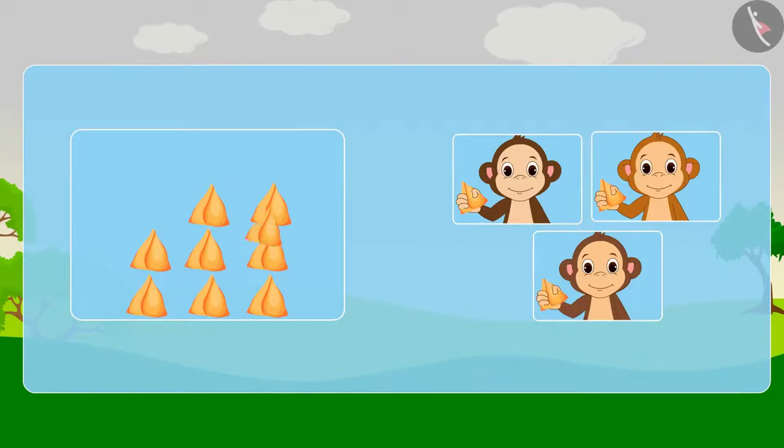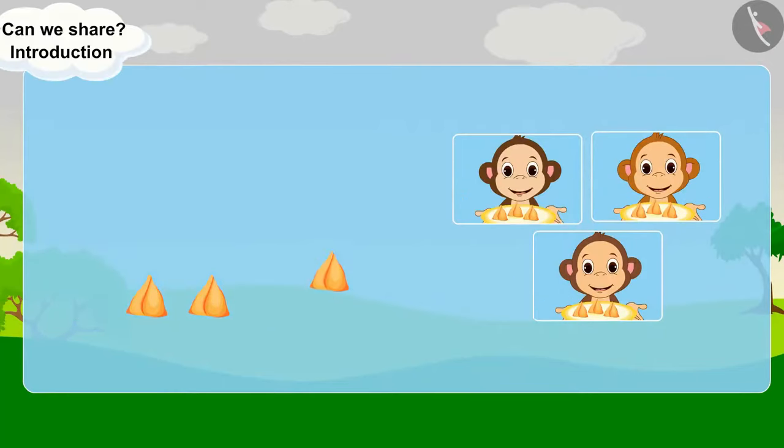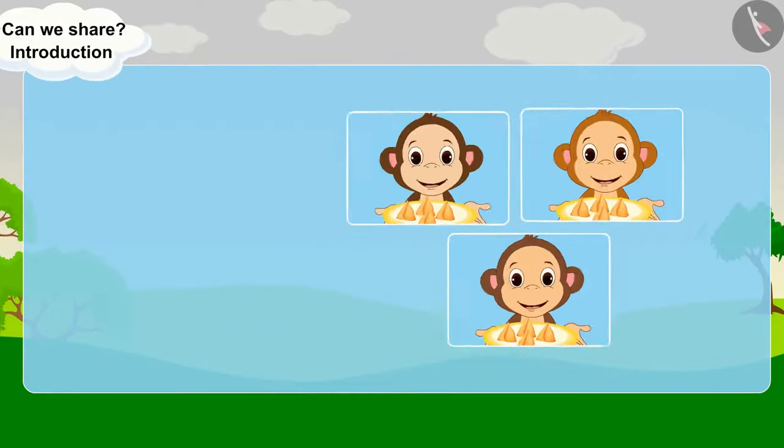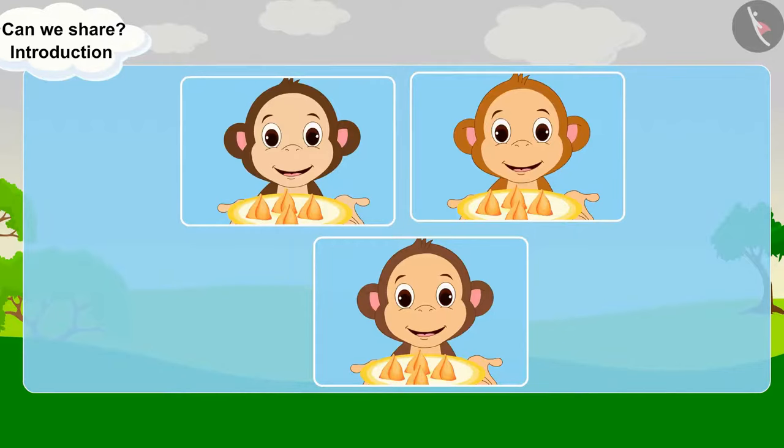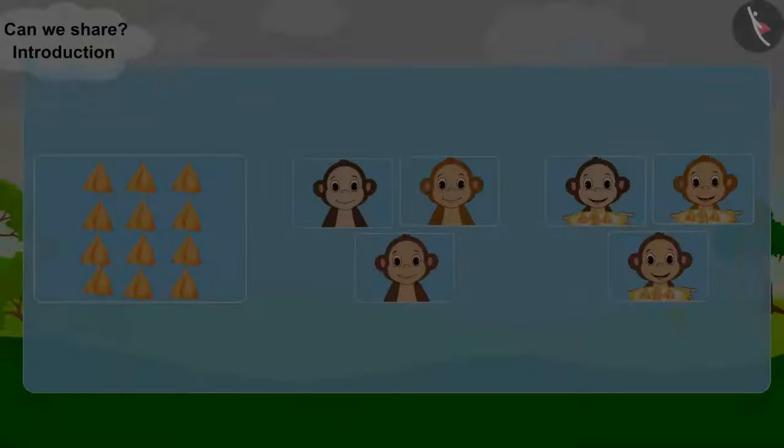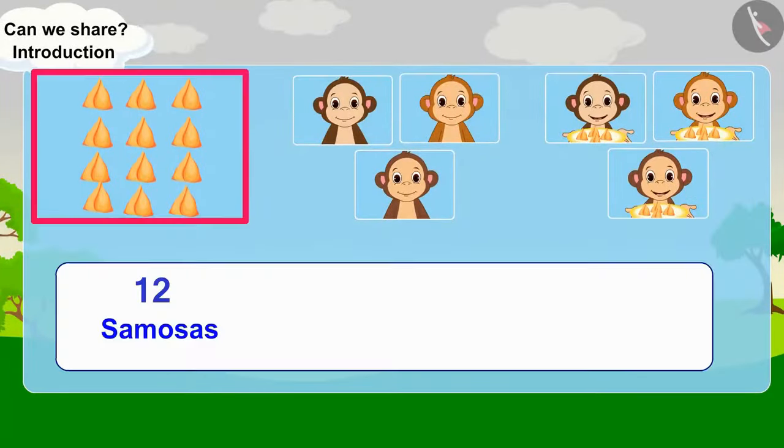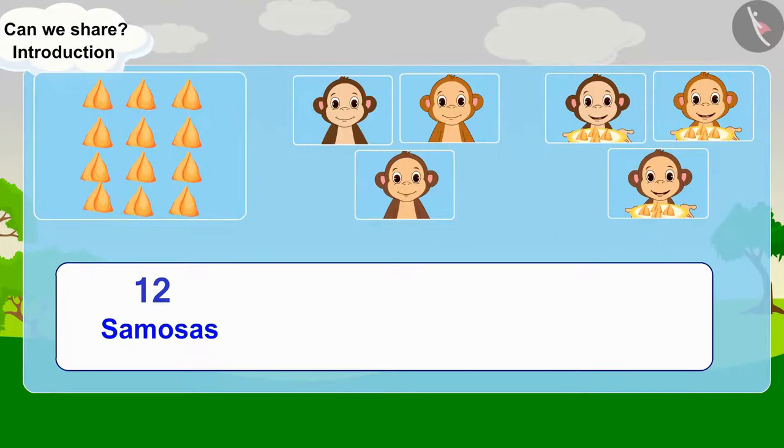Let's do it together. Yes, every monkey will get four samosas here. There are twelve samosas here. Divide them into three equal groups. So, there will be four samosas in each group.